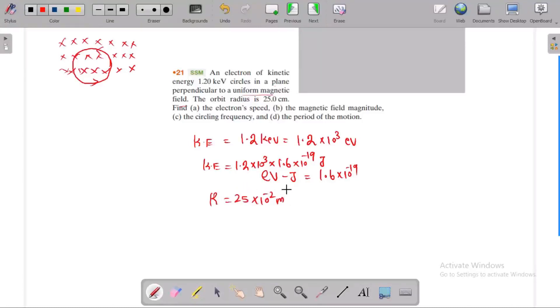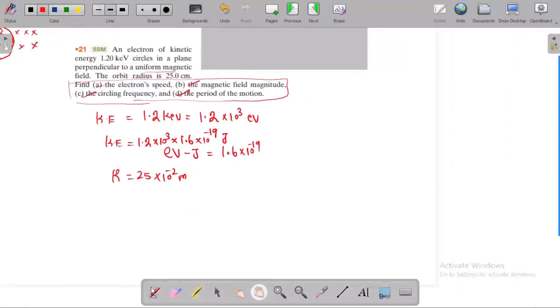We want to find: first is the electron speed (velocity), the magnetic field magnitude, frequency, and time period. How do you find the electron speed? We know that kinetic energy equals 1/2 mv², so velocity equals the square root of 2 times kinetic energy divided by mass.